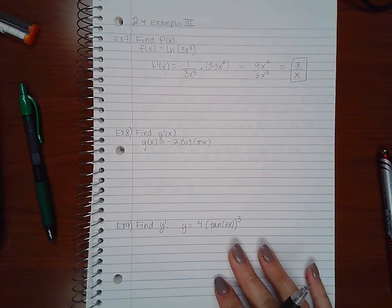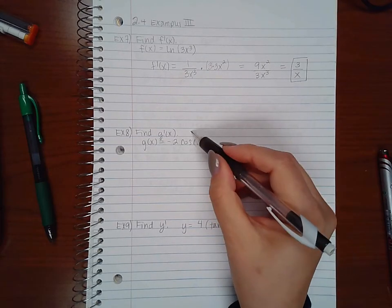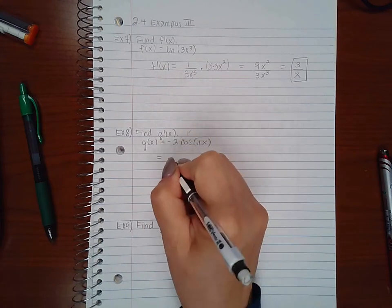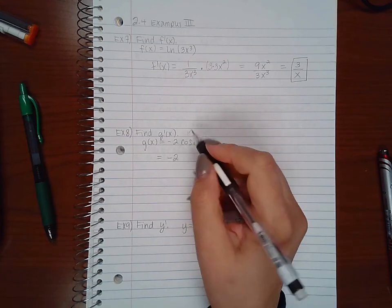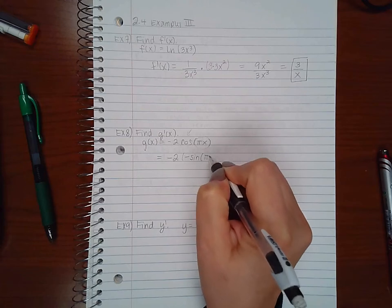Now example 8. I do have an inner function and I do have an outer function. So I'm going to take the derivative. My constant multiplier is a negative 2. The derivative of my outside function is negative sine and I keep the angle the same.